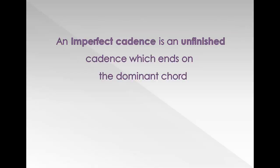An imperfect cadence is an unfinished cadence, which ends on the dominant chord. In other words, it is the opposite of perfect. A perfect cadence begins on chord V. An imperfect cadence ends on chord V.